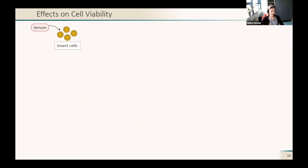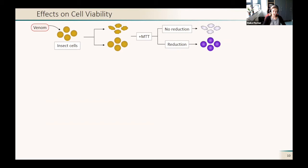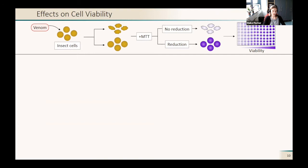I will start with the effects on cell viability. For that, we used insect cells which we treated with our venom fractions. Then the cells either died or didn't die. After a certain time, we treated them with a chemical called MTT. When the cells were alive, the MTT is reduced and it forms blue crystals. You can measure the absorbance of that color. With that, we can measure the viability because dead cells don't form these blue crystals and alive cells form these blue crystals.